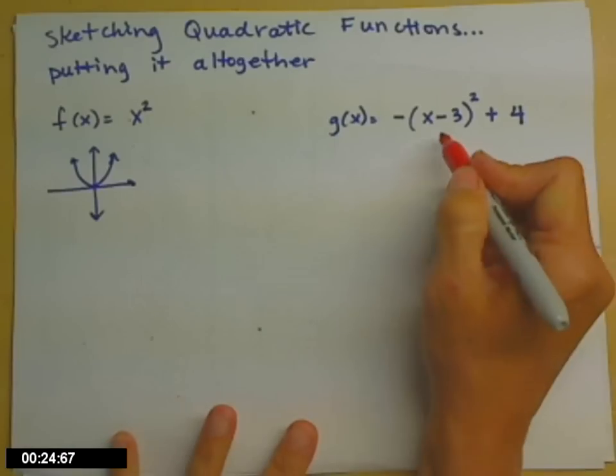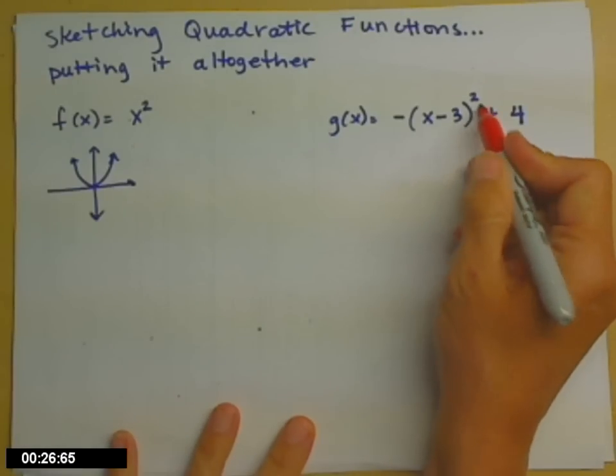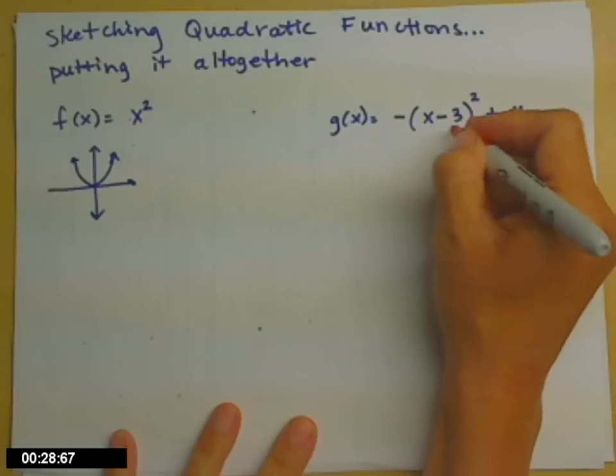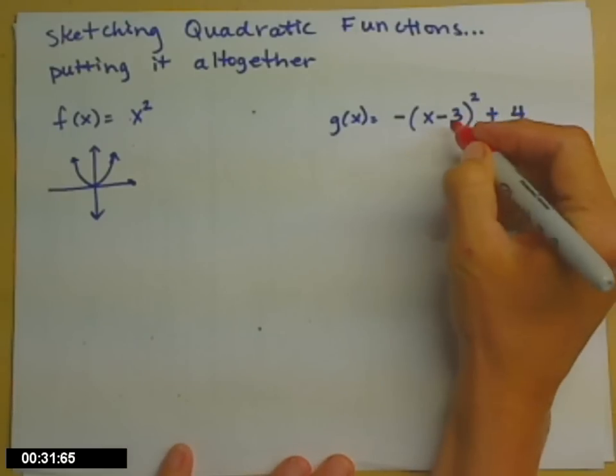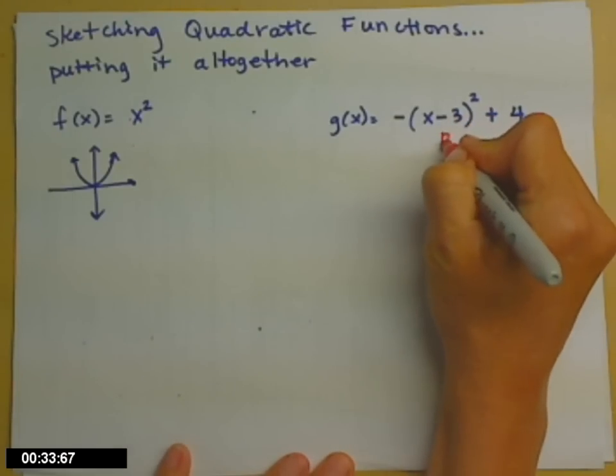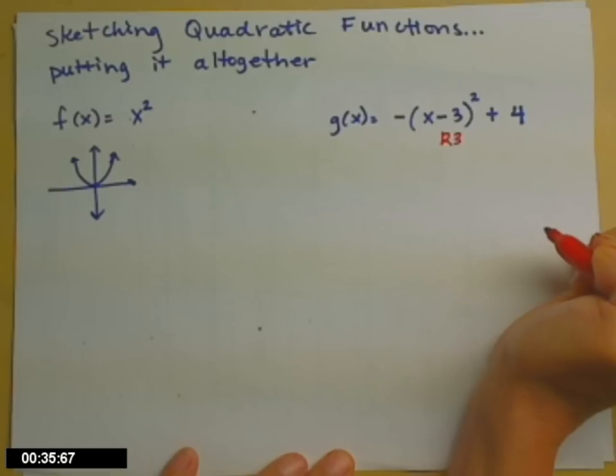First of all, we have a minus 3 inside the parentheses before we square. Remember, numbers inside the parentheses with the x move it left or right. Minuses move us right. So we're going to take our parabola. We're going to move it right three spaces.